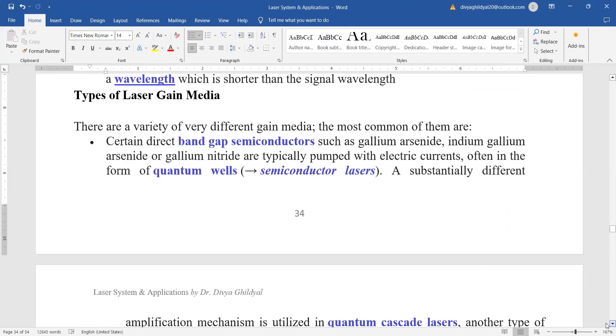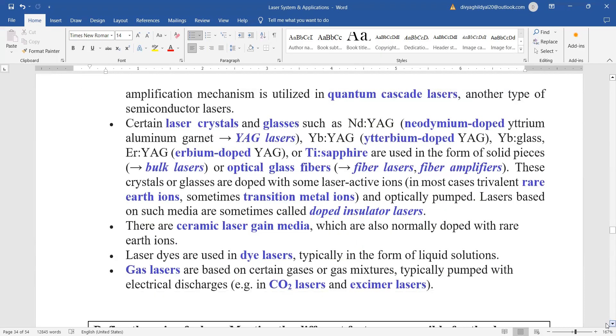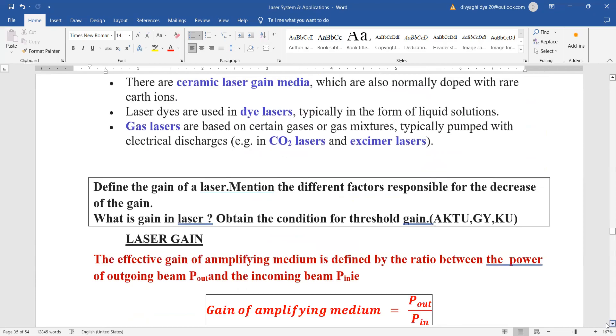There are many types of laser gain media. Band gap semiconductors such as gallium arsenide are typically pumped with electrical currents. Laser crystalline glasses such as neodymium-doped yttrium aluminum garnet are based on doped insulator levels. Ceramic laser gains are doped with rare earth ions. Laser dyes are used in dye lasers. Gas lasers are based on gases like carbon dioxide.